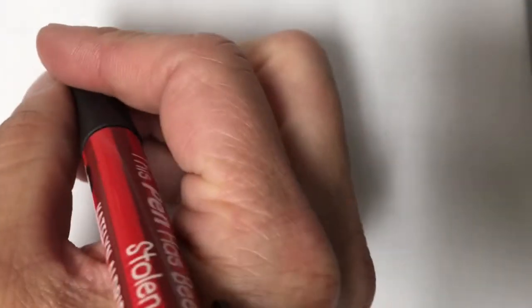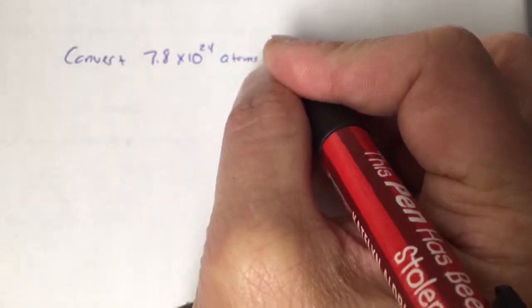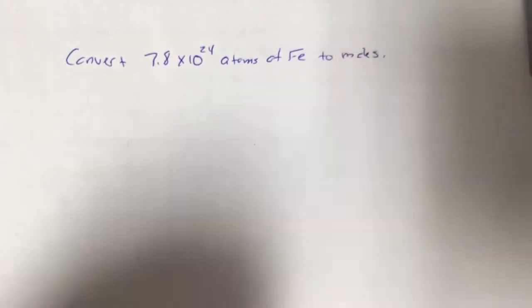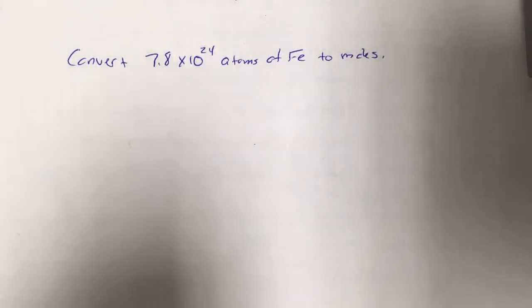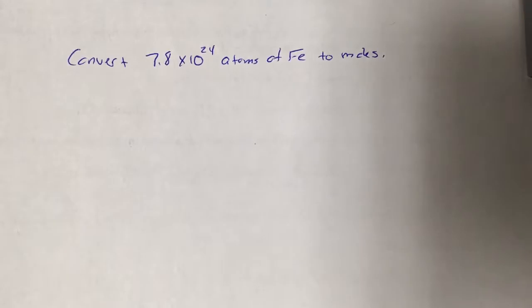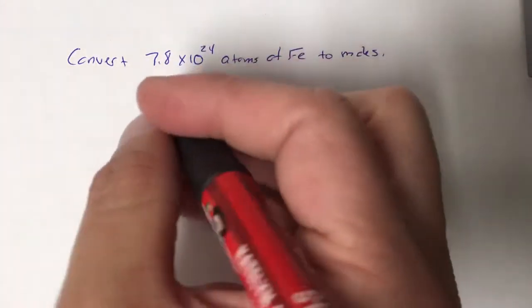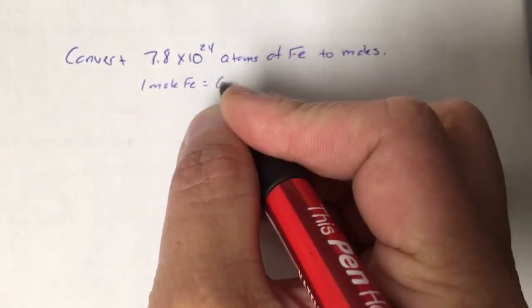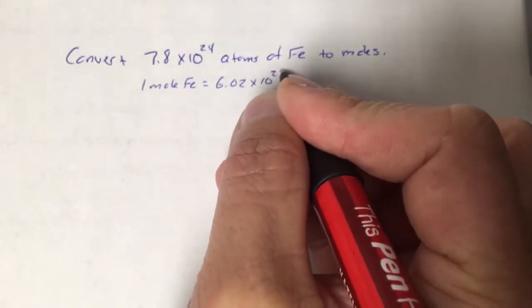Let's do one more — the opposite conversion. Convert 7.8 times 10 to the 24th atoms of iron to moles. I used 'atoms' this time because iron is an element and it's not diatomic. Whenever it's just a normal element, the word for particles is atoms. The equivalence is still the same: one mole of iron equals 6.02 times 10 to the 23rd atoms.